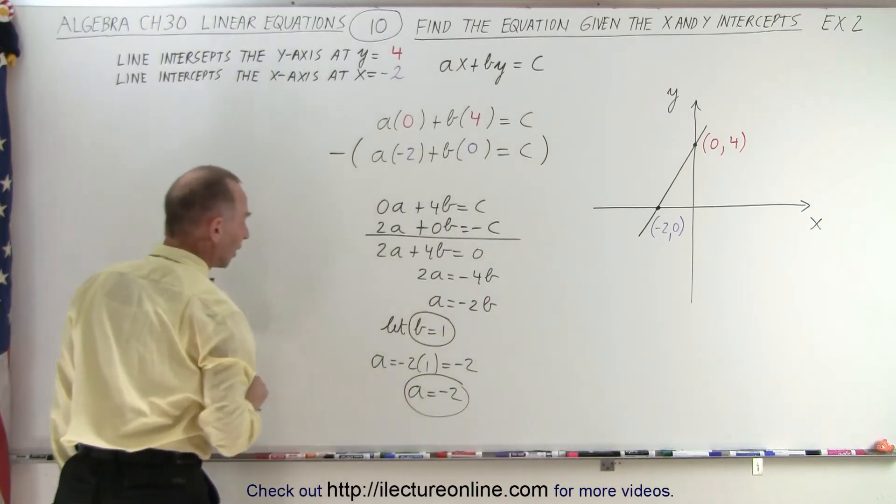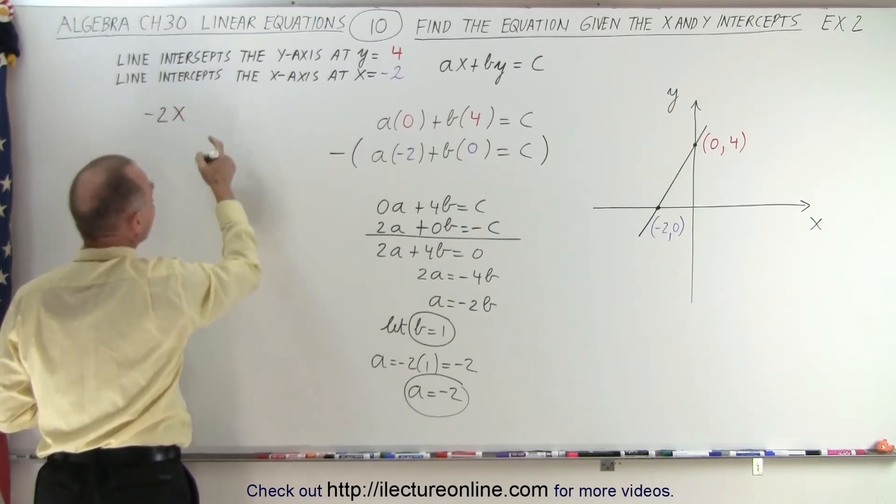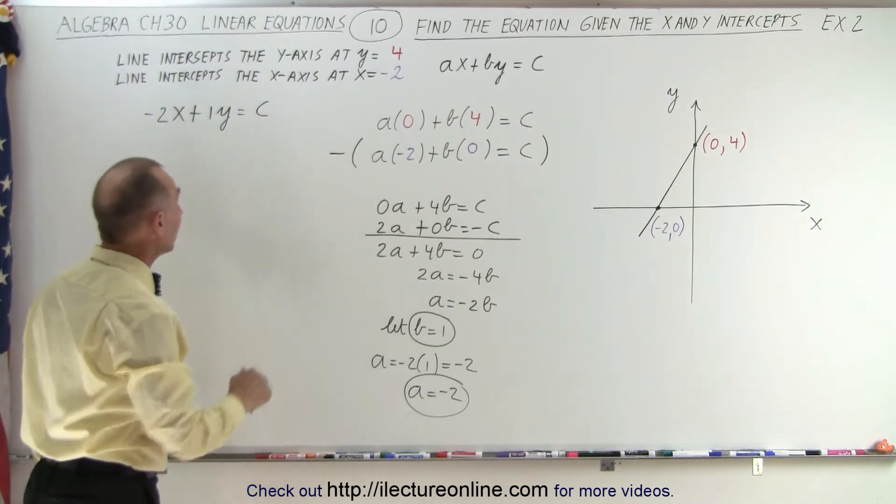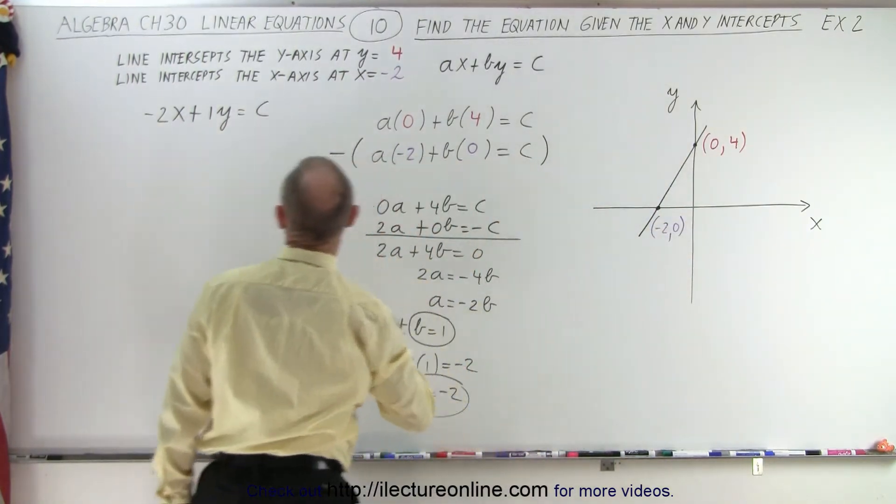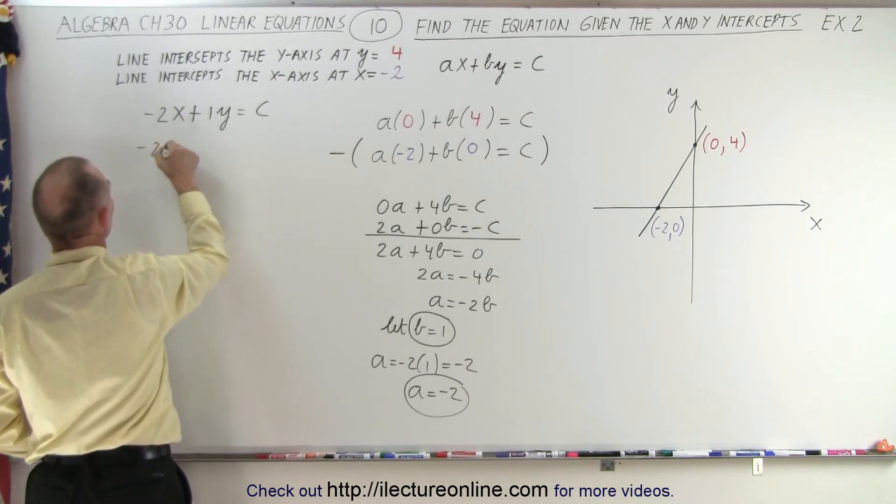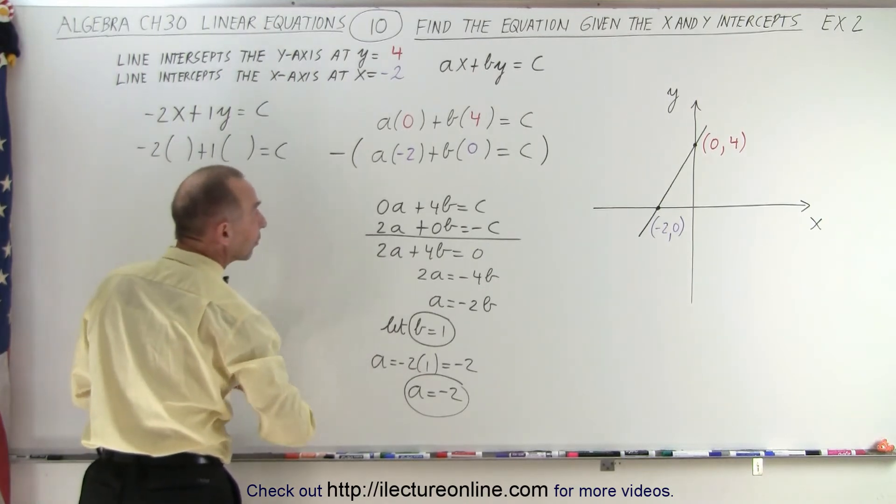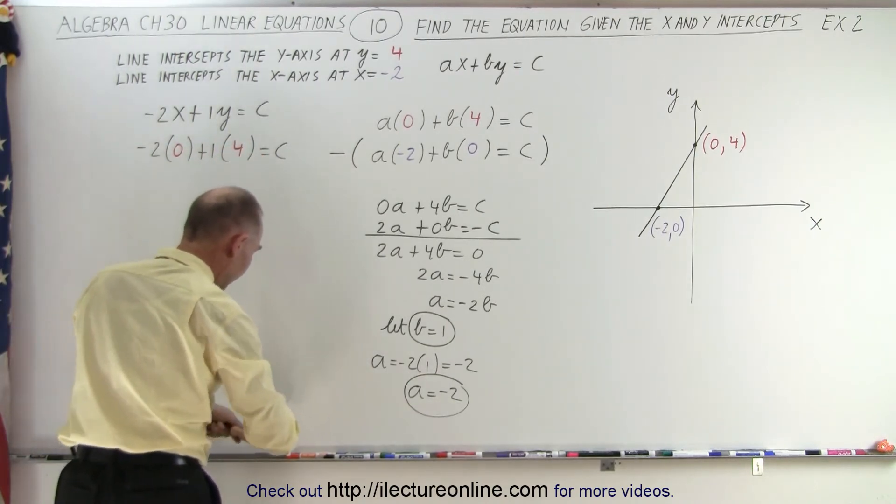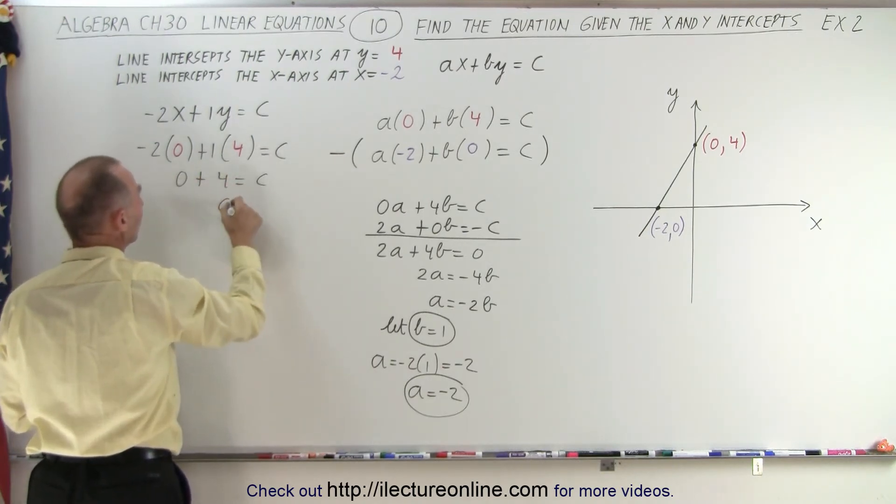Let's plug that into our general equation. We have a is negative 2, so negative 2 times x plus b, that's 1, plus 1 times y is equal to c. Now all we have left to do is solve for c, and we can do that by taking either one of our two points and plugging them in for x and y into our equation and solving for c. Minus 2 times x plus 1 times y equals c. Let's plug in the values where the line crosses the y-axis: 0 for x, 4 for y. We get 0 plus 4 equals c, or c is equal to 4.